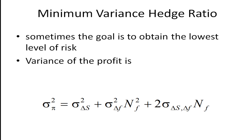Another type of hedging we can do is a minimum variance hedge — that is, we want to minimize the variance of the profits. If we take that equation and look at the variance of the profits, it would be the variance of the spot plus the variance of the futures times the hedge ratio squared, plus two times the covariance between the spot and the futures times the number of contracts.